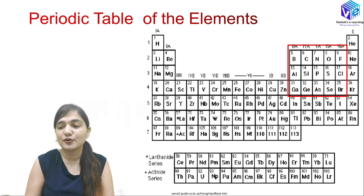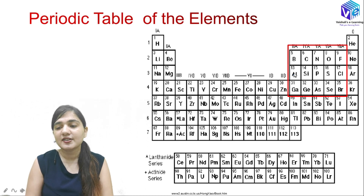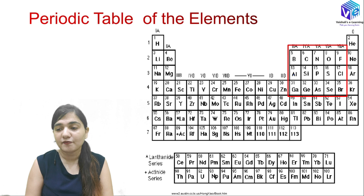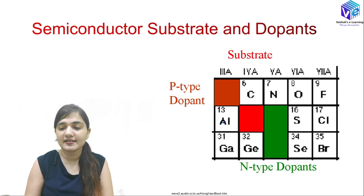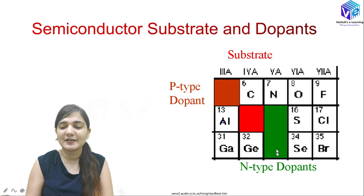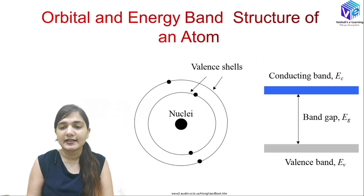Looking at the periodic table, silicon and germanium are our primary semiconductors. Before them, we have aluminium and gallium, which are P-type elements, and phosphorus and arsenic, which are N-type elements. In the VLSI industry, we mostly use boron as the P-type dopant, silicon as the substrate (around 98% of the time), and phosphorus and arsenic as N-type dopants.